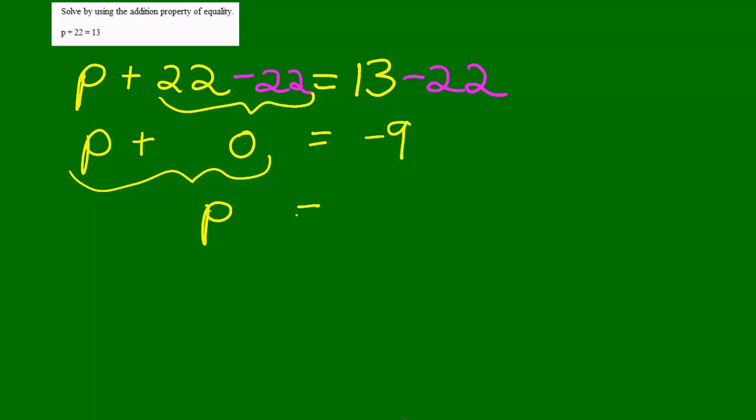P plus 0 is P, so P equals negative 9. However, there's a more algebraic way to do it because opposites, when added, equals 0.